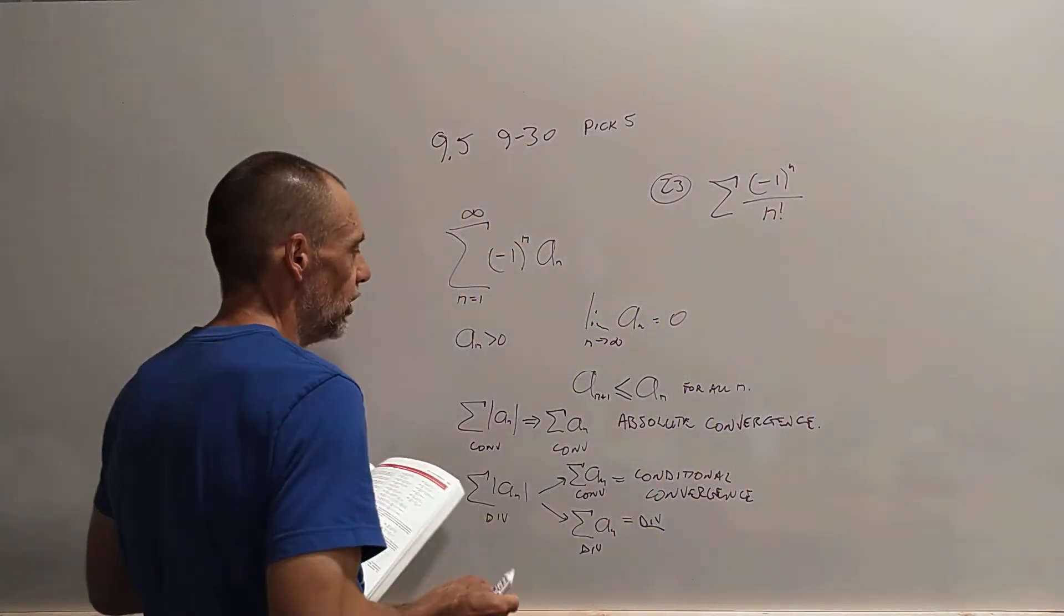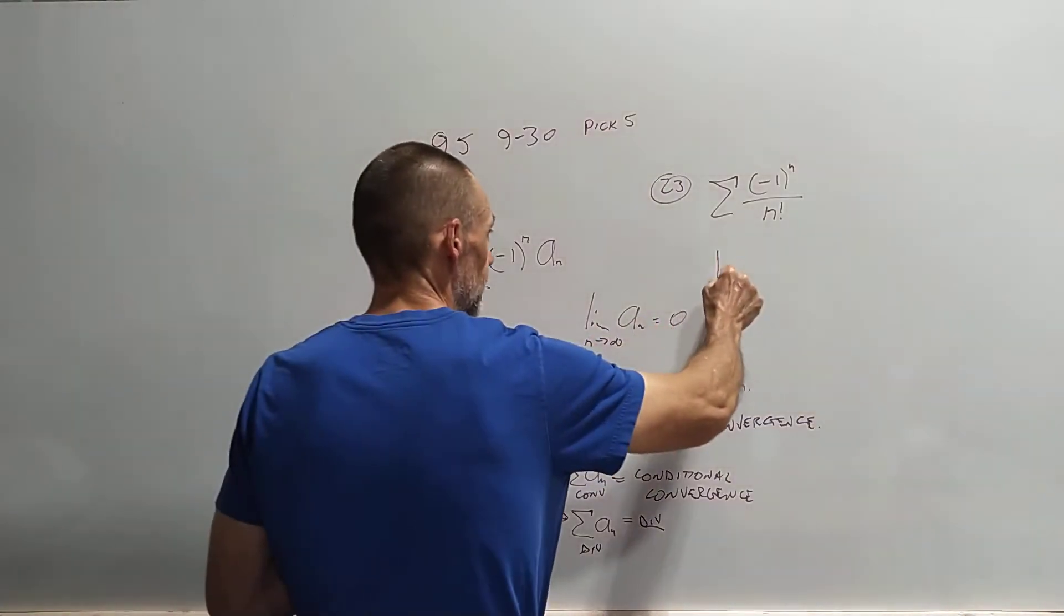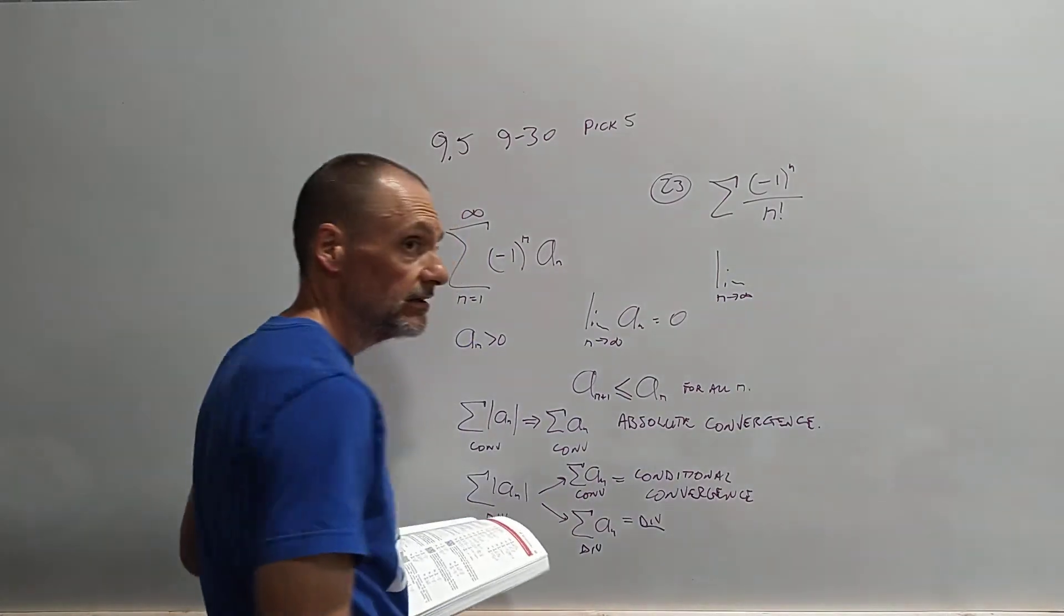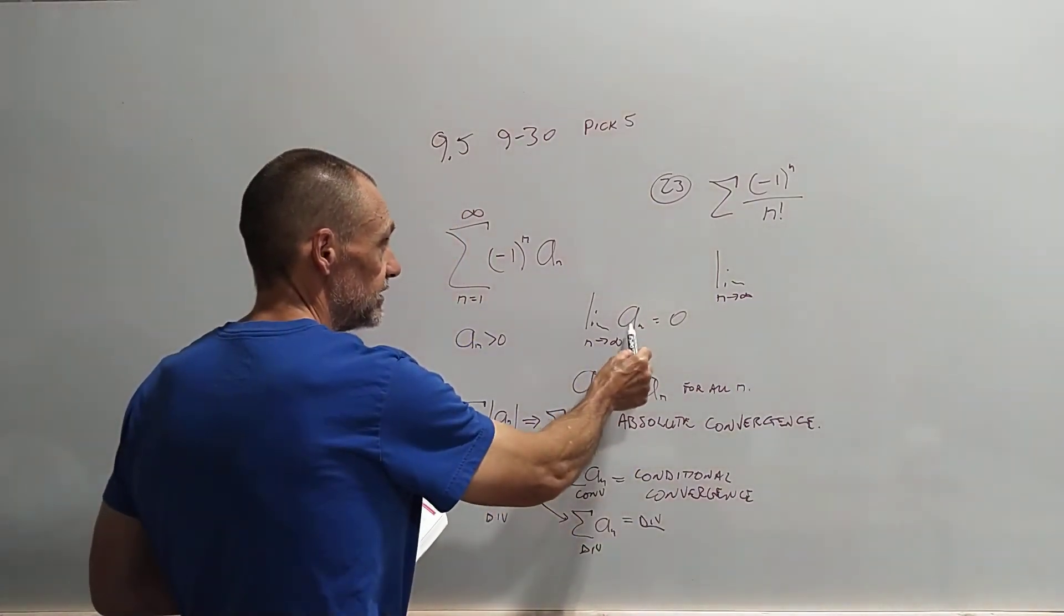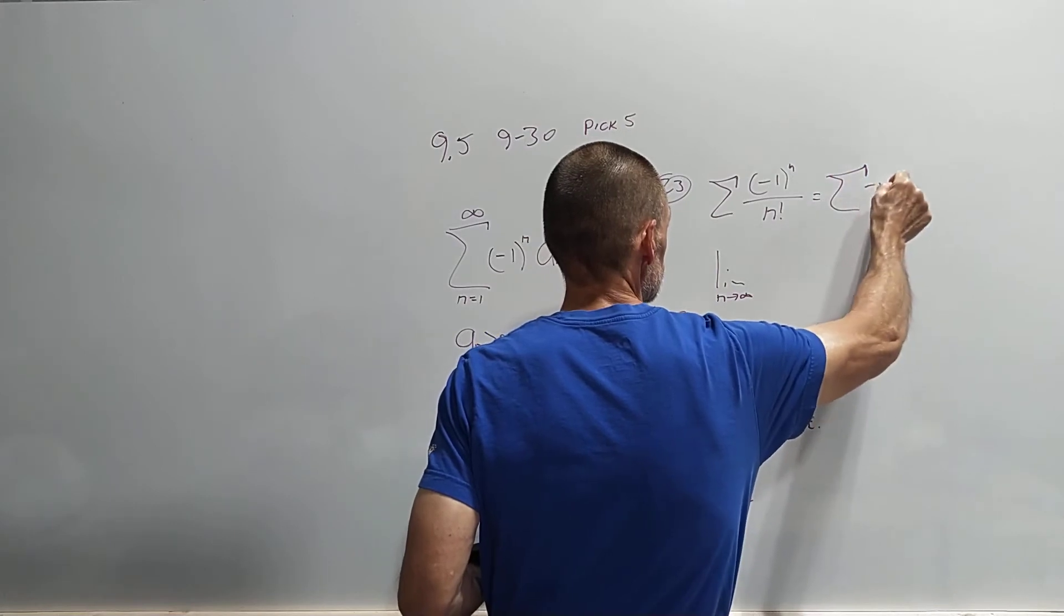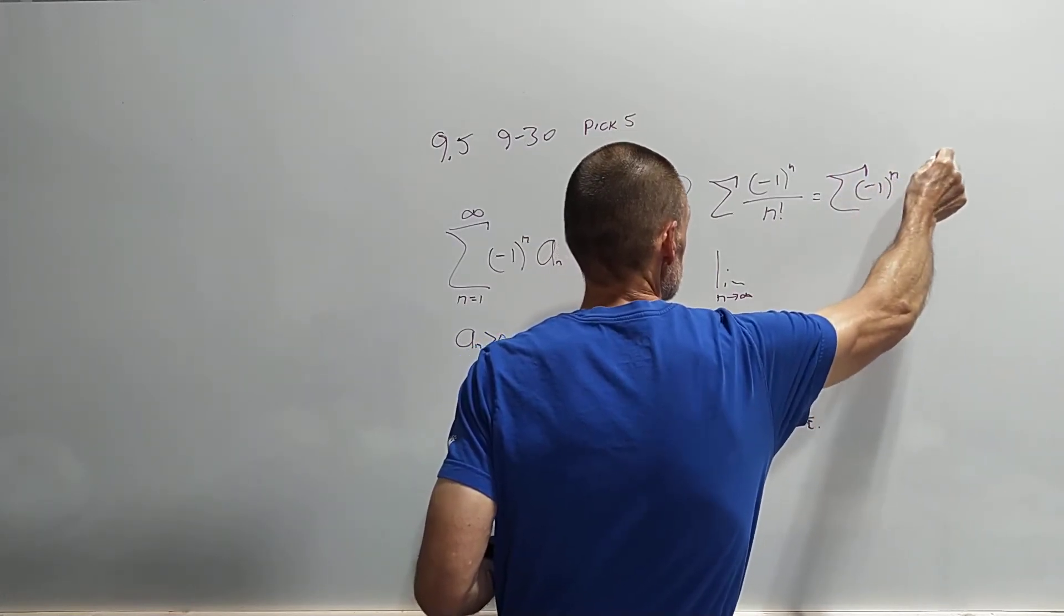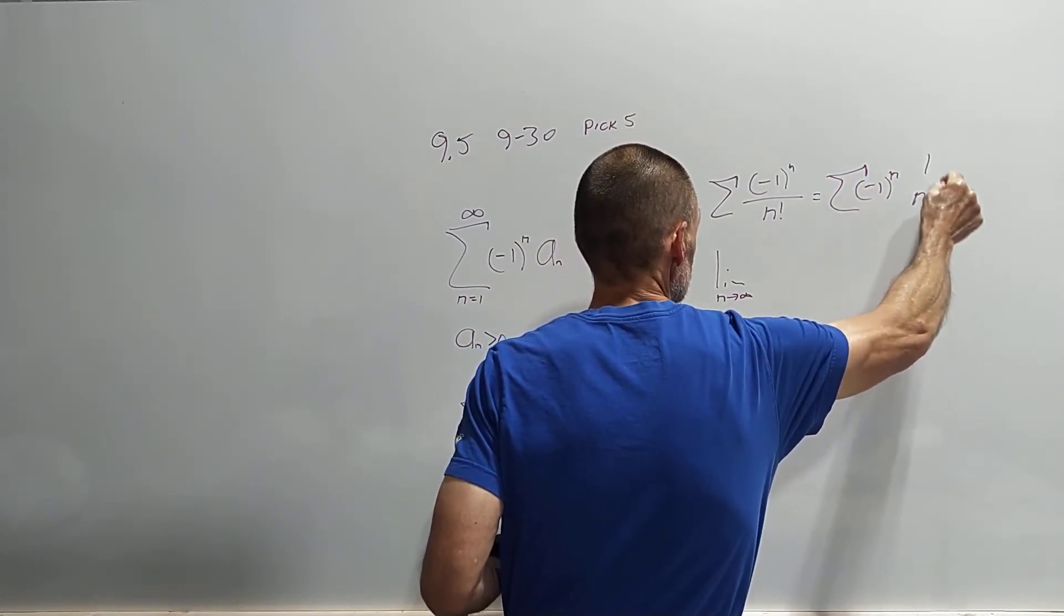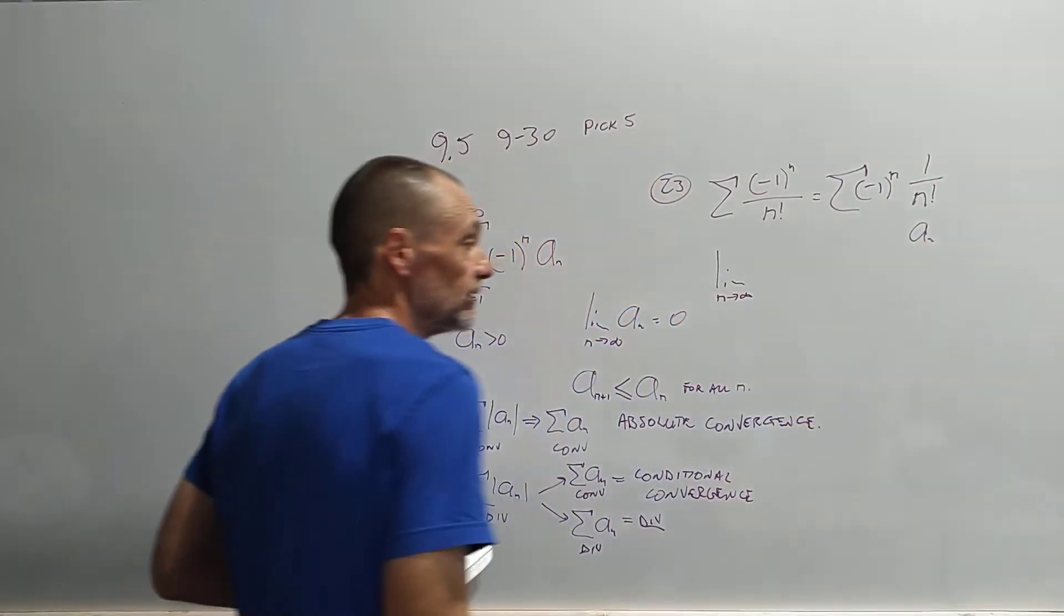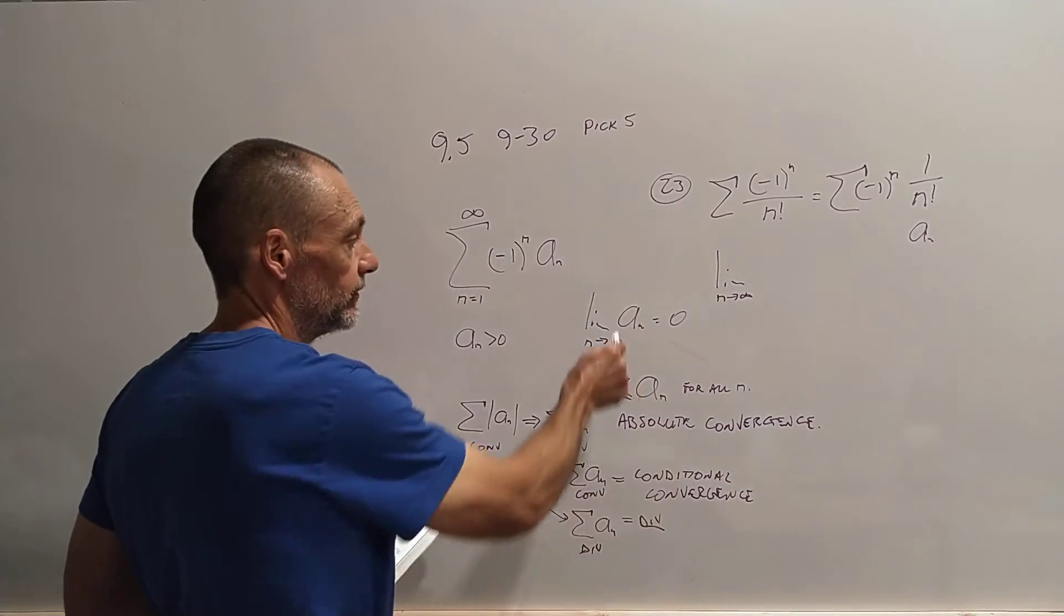So we need to show this limit. So we have the limit as n approaches infinity. Now notice that the negative 1 and the n is gone. This is just n. So in other words, this can be written like this. So this is the sequence. That's all we really care about.